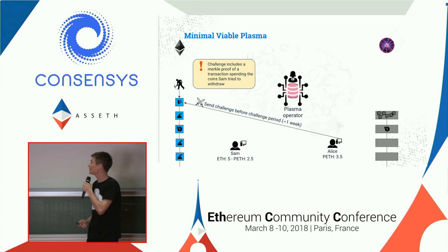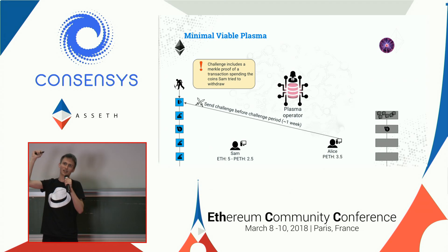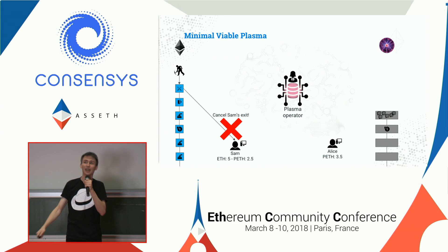Alice notices the exit has been included in the main chain and immediately submits a challenge before the challenge period ends, with the Merkle proof of the transaction tree and the state tree. The contract evaluates that, checks to see it's invalid, and pays Alice's security deposit. Sam's exit is cancelled.